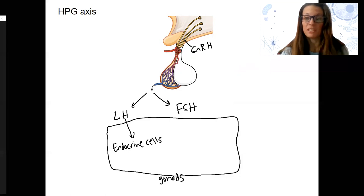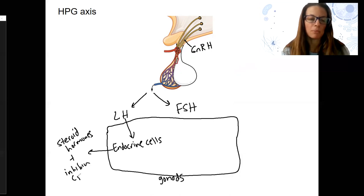Remember, there's endocrine cells in the gonads. The ovaries and testes contain cells that produce hormones as well. These endocrine cells are going to do what? Well, what do endocrine cells do? They produce hormones. So they're going to produce steroid hormones, these are our sex steroids. And they're also going to produce one peptide hormone called inhibin. This is a peptide.